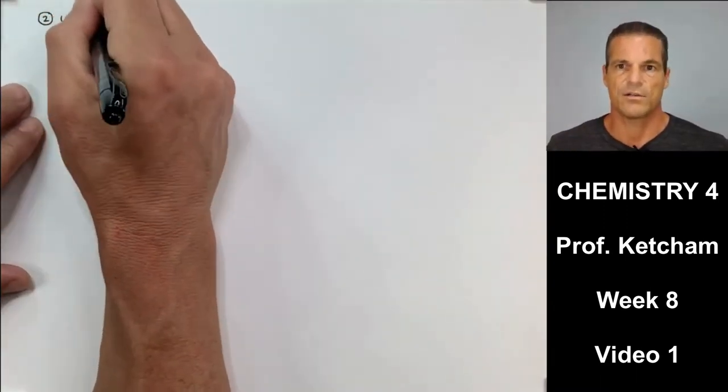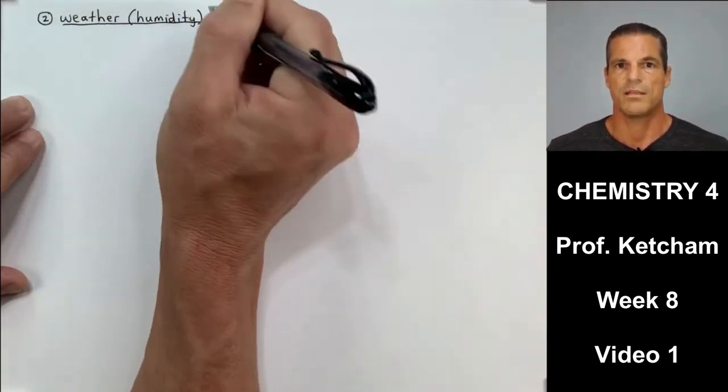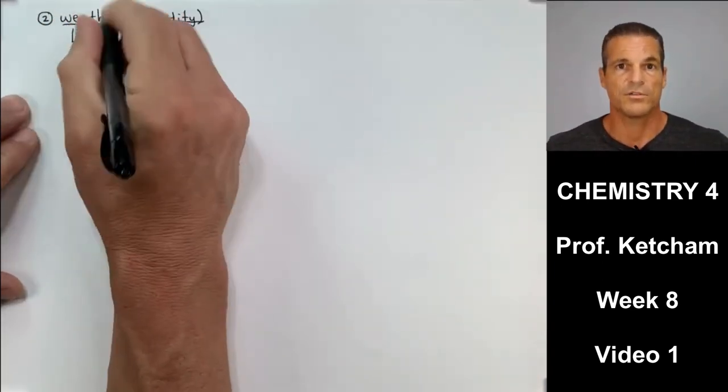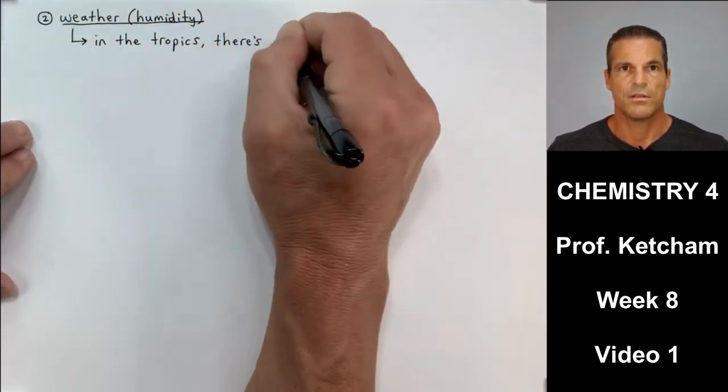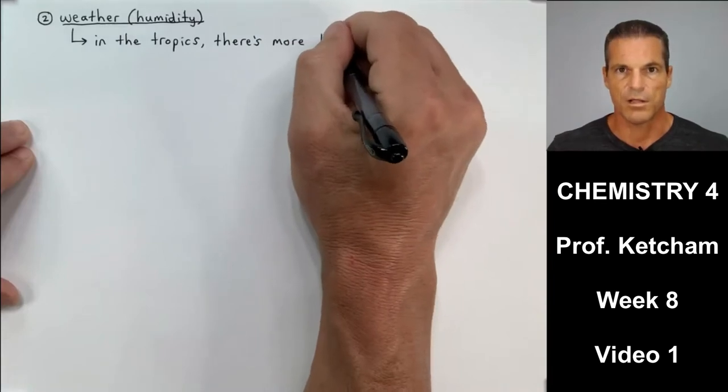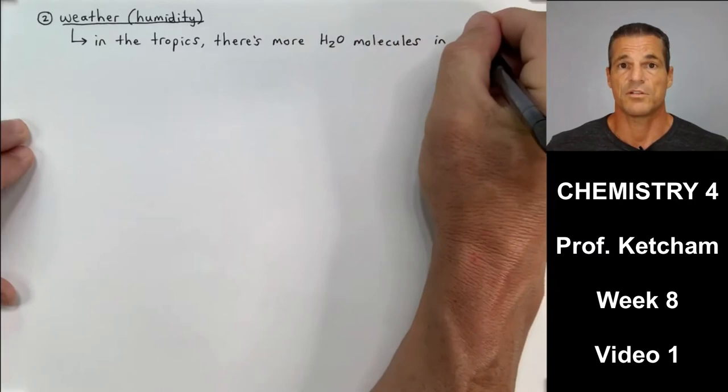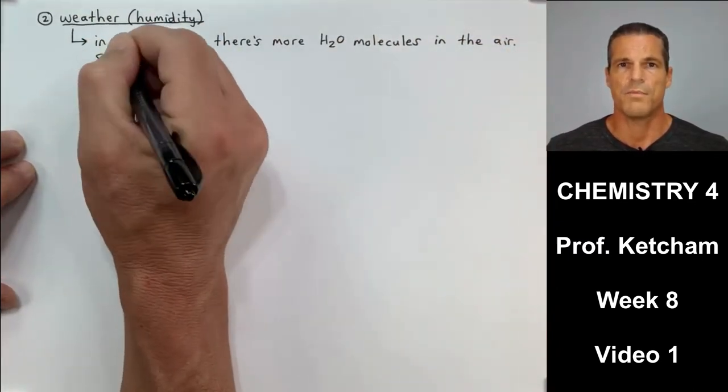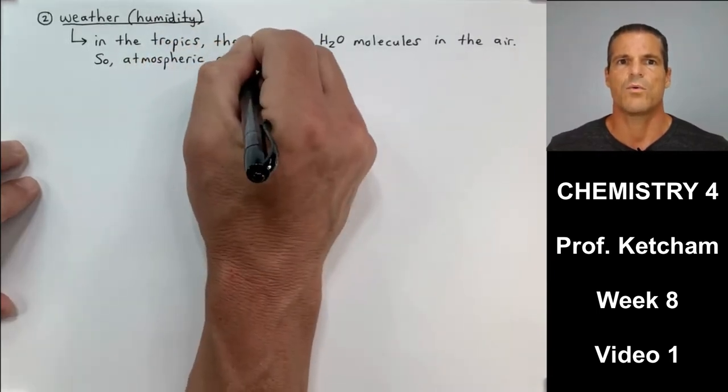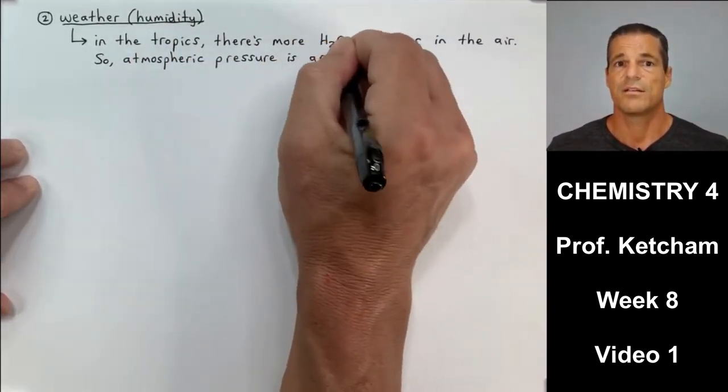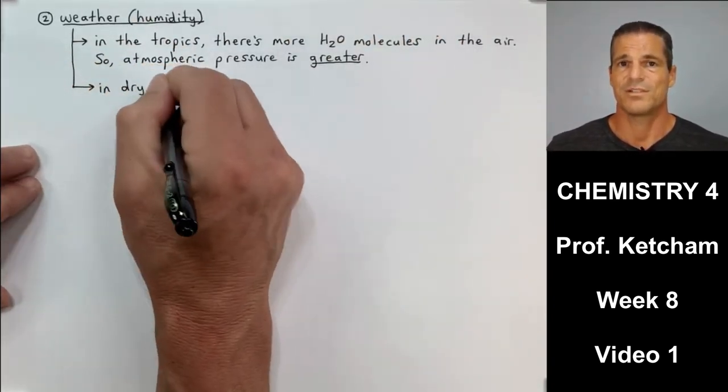The second factor affecting pressure or atmospheric pressure is the weather, humidity. How many water molecules are in the atmosphere? The more molecules you have in the atmosphere, the more amount of molecules in the atmosphere, the greater the atmospheric pressure. So, in the tropics, there's more water molecules in the air. It's very humid in the tropics. Around the equator, there's more water molecules in the air. So, the atmosphere weighs more and the atmospheric pressure is greater.